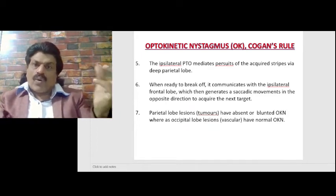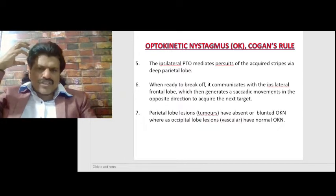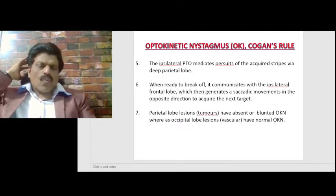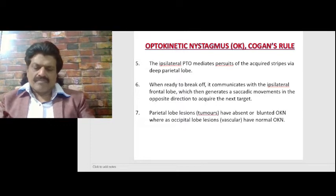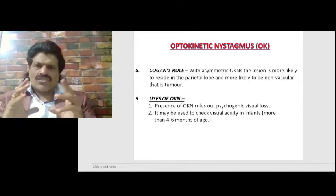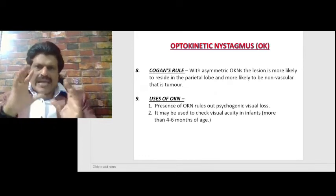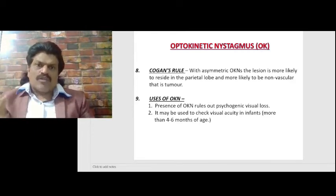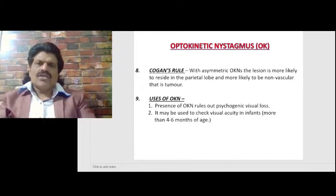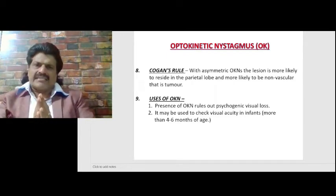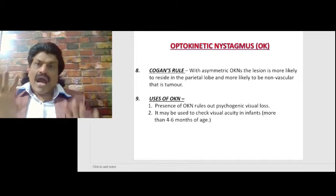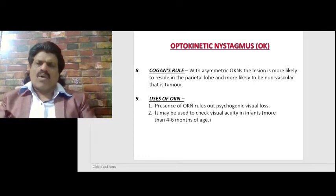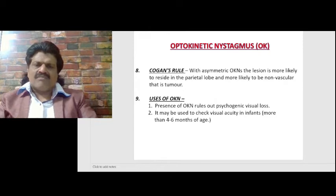Parietal lobe lesions such as tumors produce absent or blunted optokinetic nystagmus, whereas occipital lobe lesions that are vascular have normal optokinetic nystagmus. According to Cogan's rule, with asymmetric optokinetic nystagmus, the lesion is more likely to reside in the parietal lobe and more likely to be non-vascular — that is, a tumor.